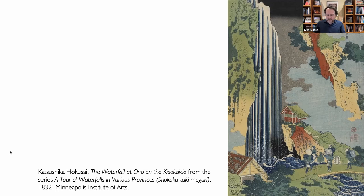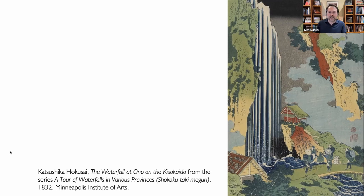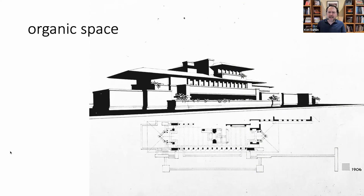Wright was not only interested in the Japanese print — he was an accomplished dealer in them, purchasing for others many outstanding impressions now in major U.S. museums. The Hokusai print shown here was one Wright owned. It depicts travelers pausing by the Ono waterfall with a Shinto shrine precariously nearby. Waterfalls were often a destination for the religious, who purified themselves in the cold waters from the falls.